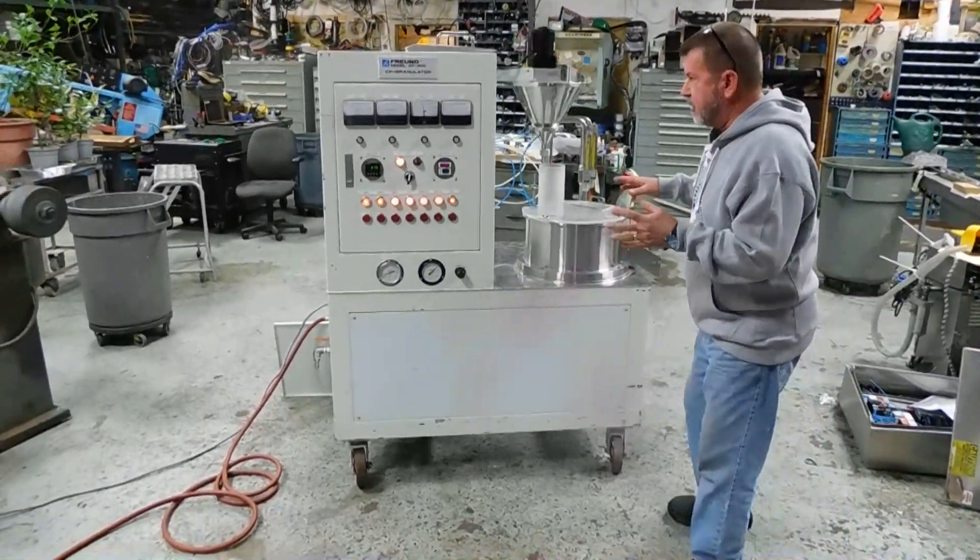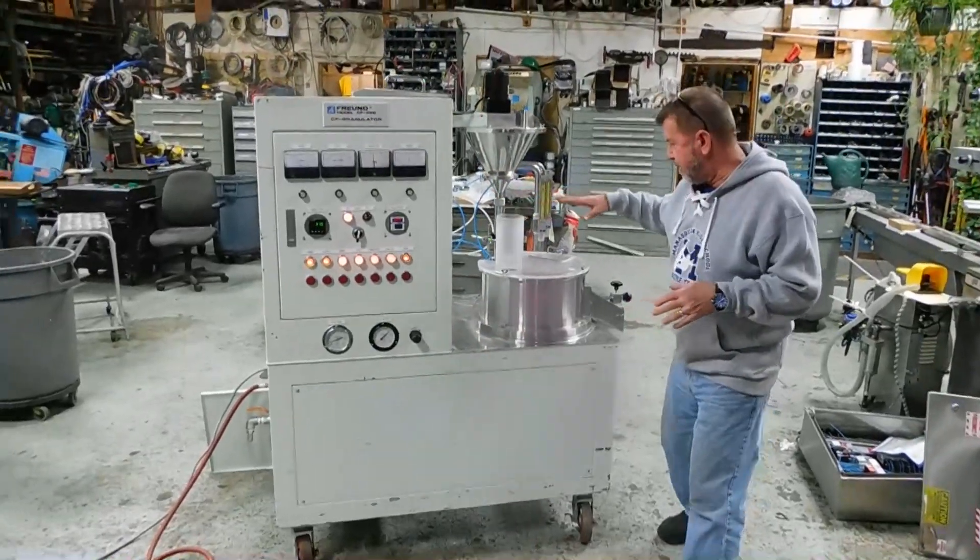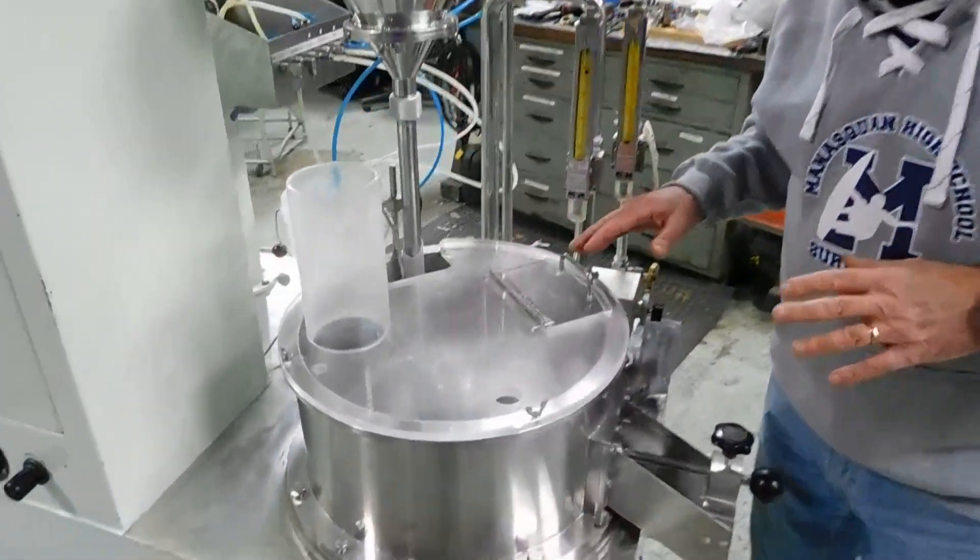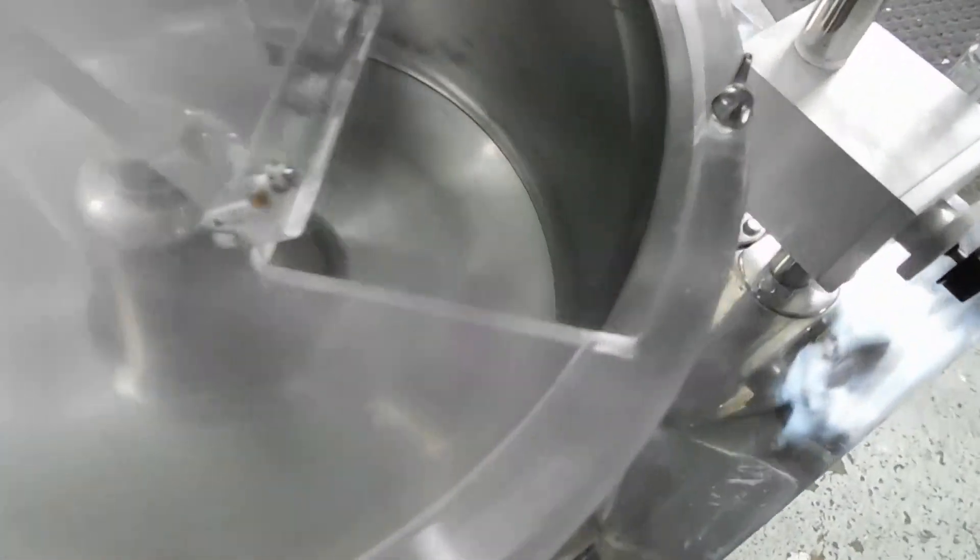We're going to take you through some of the features over here. We're going to come back to our control panel in a minute. This is the actual spray coating bowl, and you'll see we're operating right now. You can see the bowl turning.